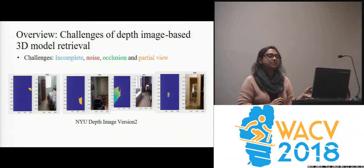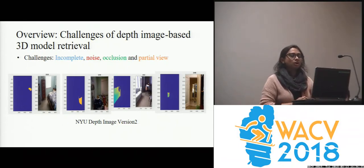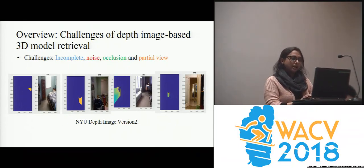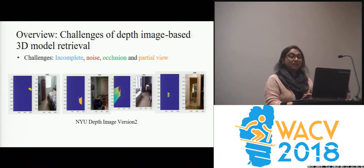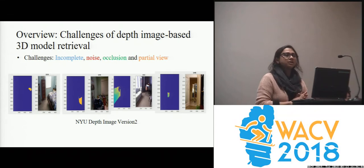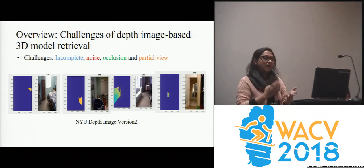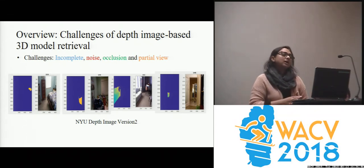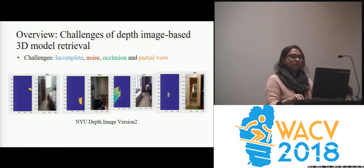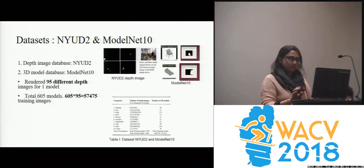In doing so, we have faced different challenges of incompleteness, noise, occlusion, and partial view. The nightstand here is incomplete and partially viewed. The sofa has some missing parts, but still we have to retrieve 3D models for these objects.